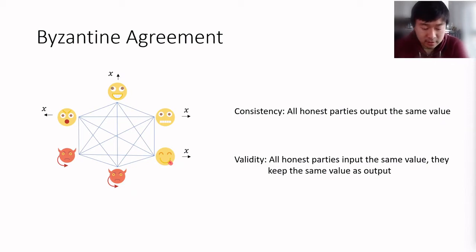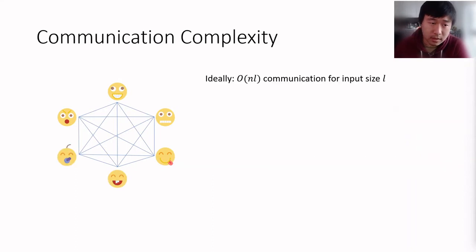So when we talk about Byzantine agreement protocols, a main efficiency metric is what we call the communication complexity. The communication complexity is basically the number of bits that honest parties have to communicate during the protocol execution, and ideally the best case scenario is if the communication complexity is something like n times l, where l is the input size in bits and n is the number of parties.